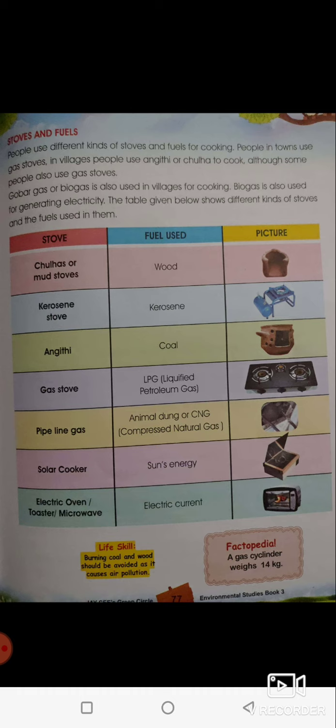The table shows different stoves and the fuels used in them. The first stove is a chulha, which is a mud stove — wood is used as fuel in it. The next is a kerosene stove, which uses kerosene. The third is an angithi — charcoal or coal is made into fire in it to prepare food.